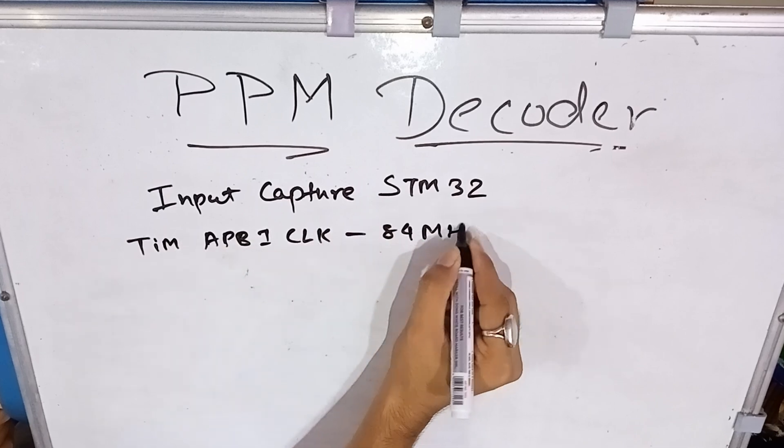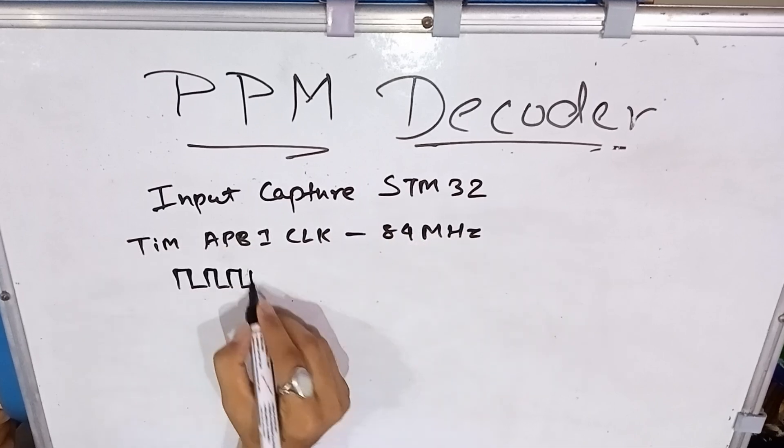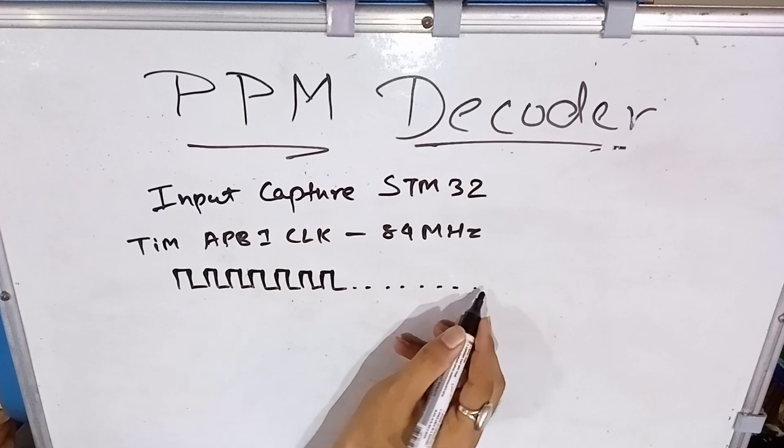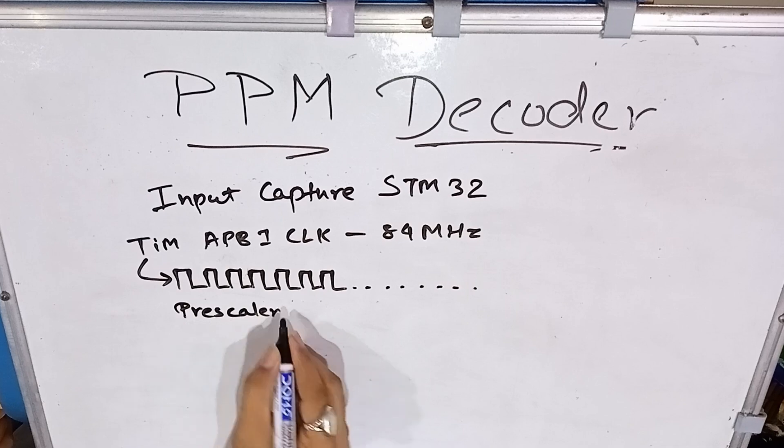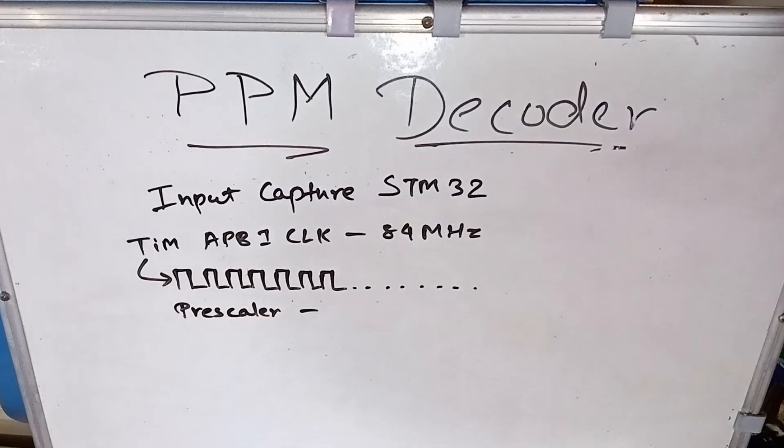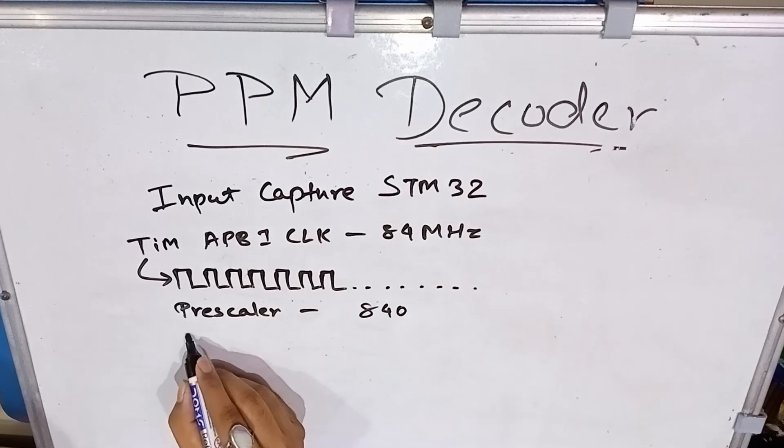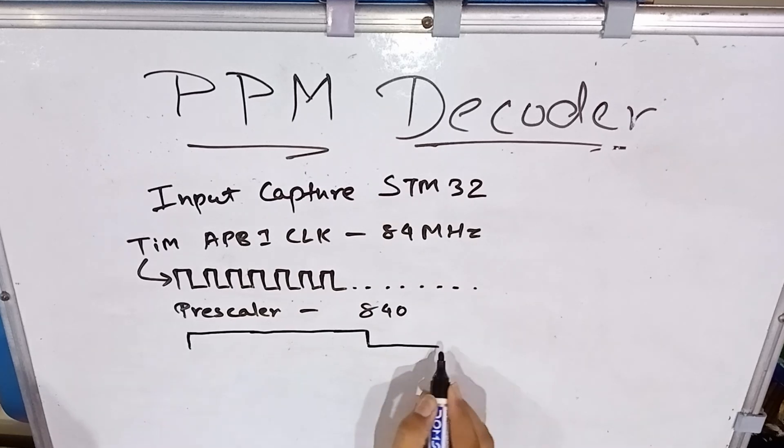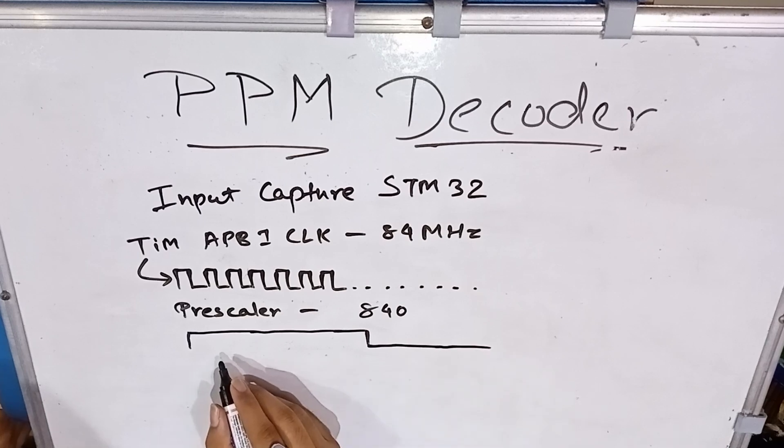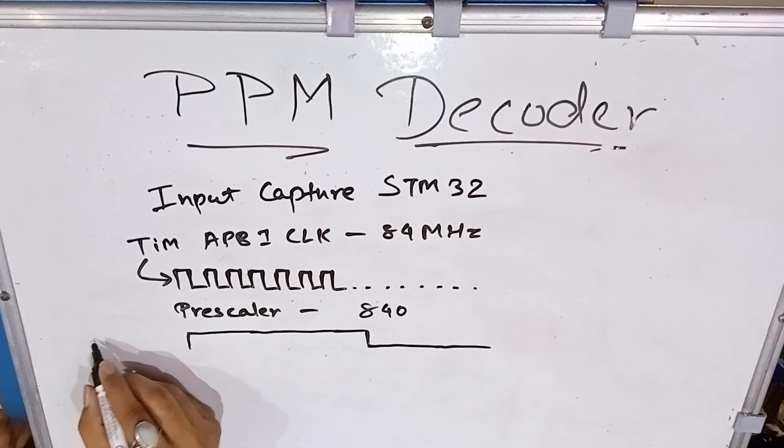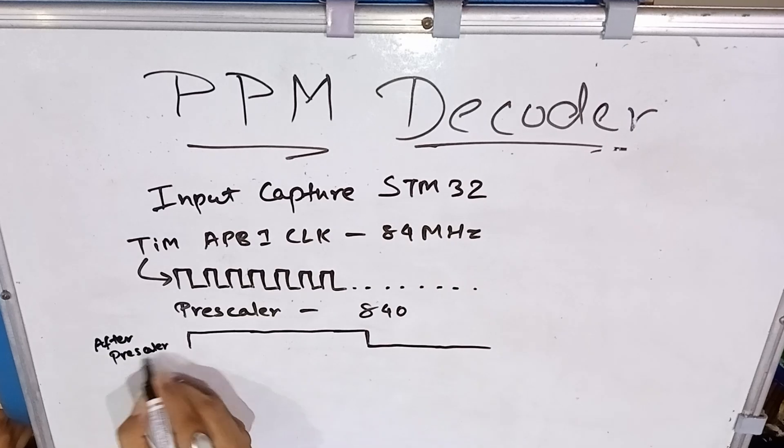Two tasks could be done for capturing this PPM signal. One could be interrupt-based and a timer counter, second could be input capture. I'll be going with input capture mode as it's pretty simple. Our main clock is at 84 megahertz, our prescaler is at 840, so eventually the timer clock that we have available with us is 100 kilohertz, which gives us a period of around 10 microseconds.